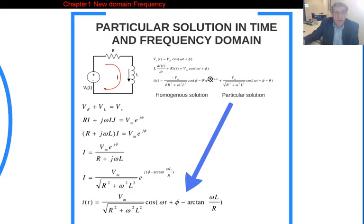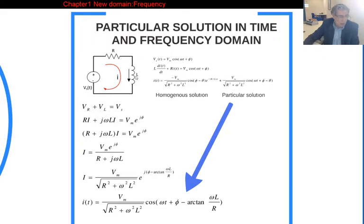In the frequency domain, instead of element voltages and currents in the time domain, we use phasors. We write the Kirchhoff voltage law equations for the single loop and use the defining relations of the elements. Since the two elements are in series, the current is the same through both. We write the phasor of the independent source as Vm times e to the power j·phi, and end up with the phasor of the current.